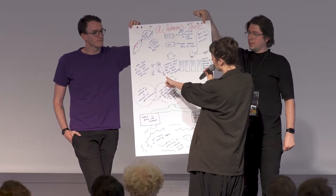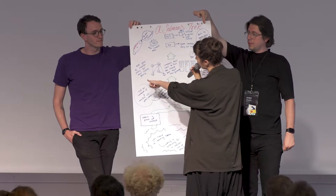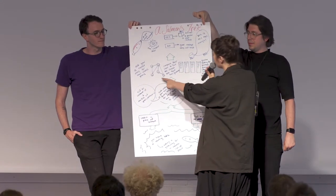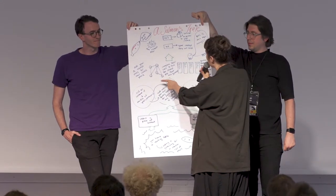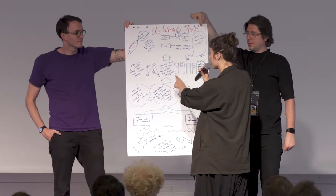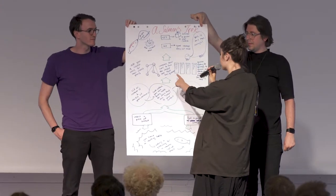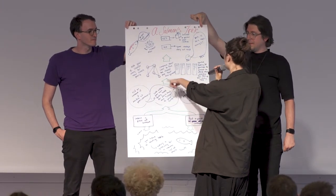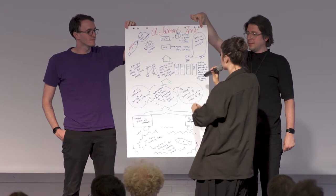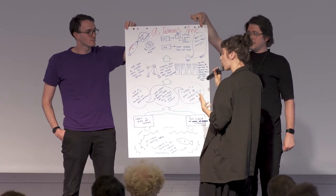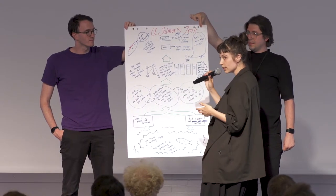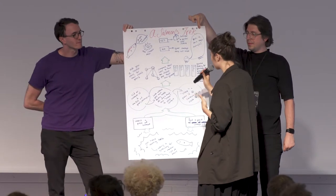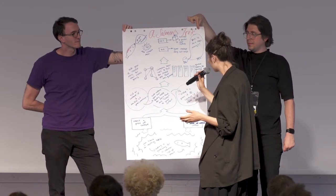You're going to find a set of peers called alpha — your alpha closest peers. And you're going to ask them all for a list of their closest peers to the content that you're looking for. Then you take all these lists, compare them, and look for a quorum amongst the lists about the single peer that is closest to the content.